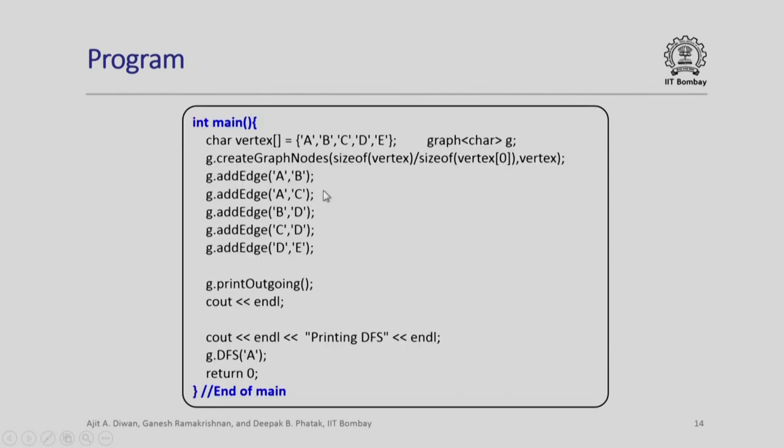The main program is now very simple. I set the vertex. Again, this is an arbitrary example ABCDE. I create graph nodes. I add edges. I print outgoing. Now I want to print DFS. So I first execute G dot DFS. This DFS will actually give me the depth first search with this starting node A. That is all the main program is.